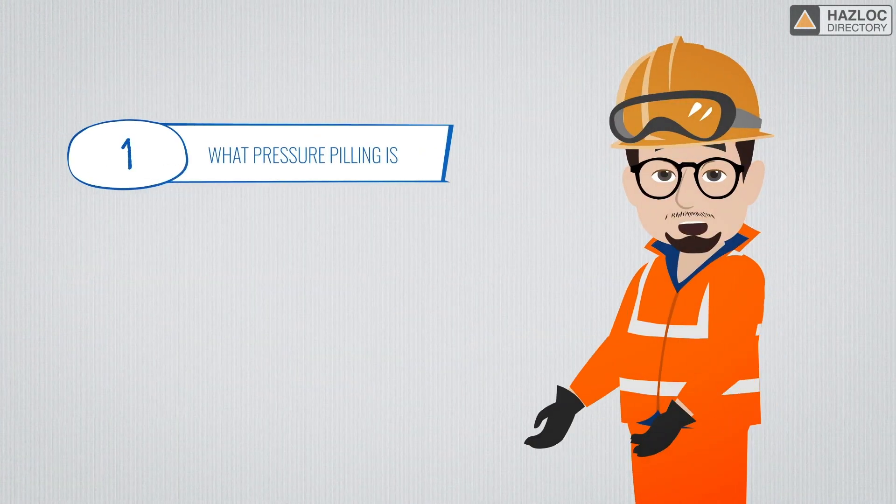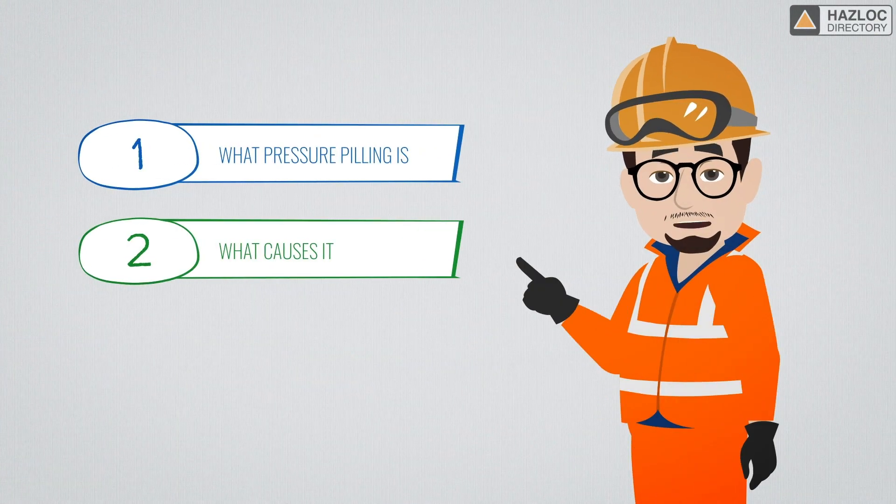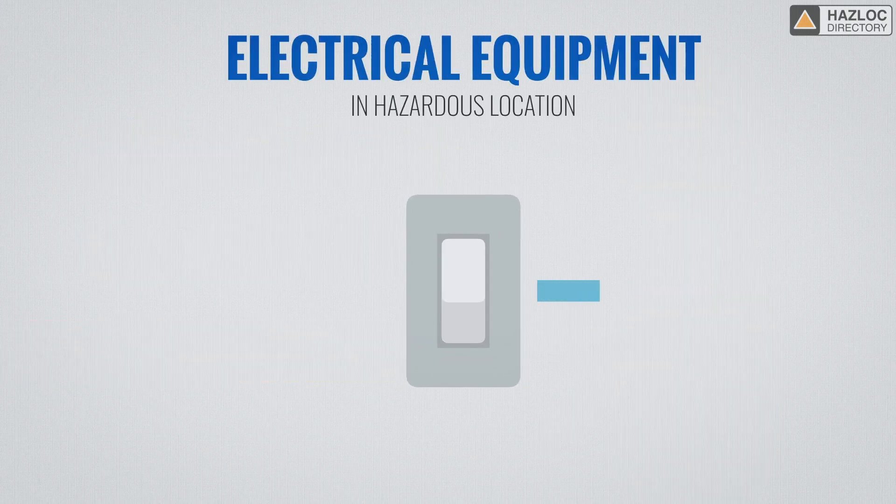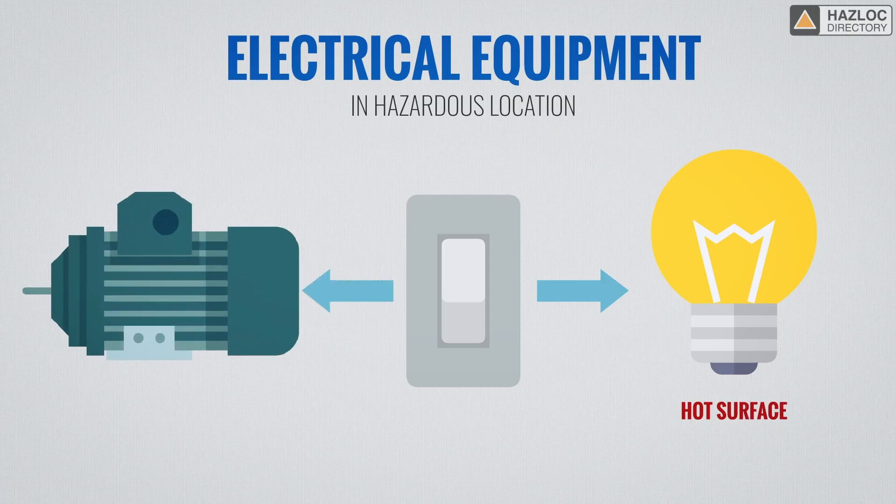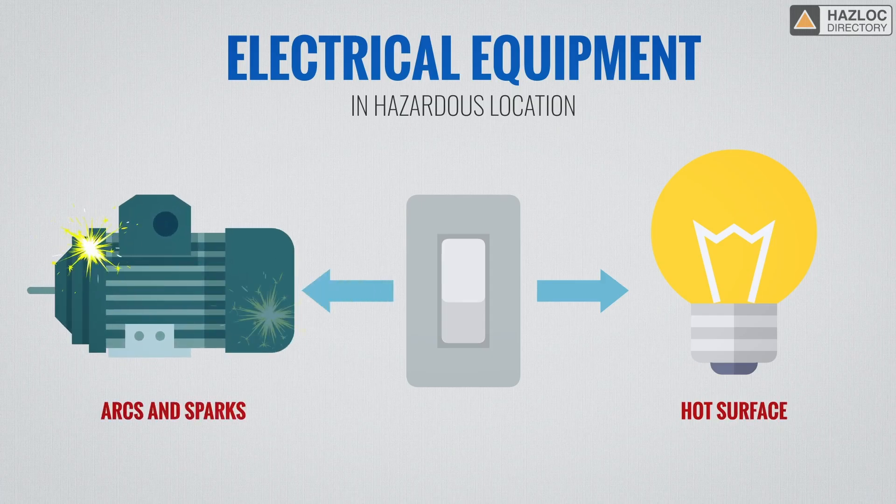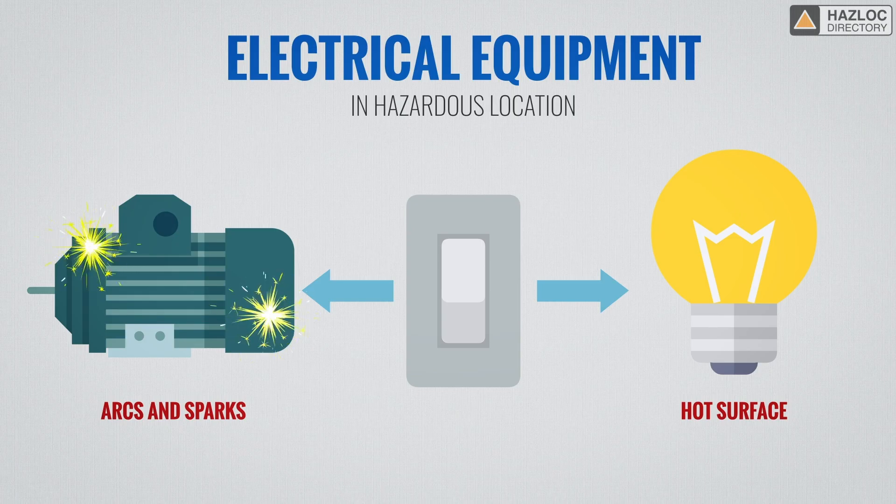It's important to understand what pressure piling is, what causes it, and how to prevent it. Electrical devices need to be used in hazardous locations. These devices can become sources of ignition. They generate heat and, in some cases, arcs or sparks under normal operating or fault conditions.